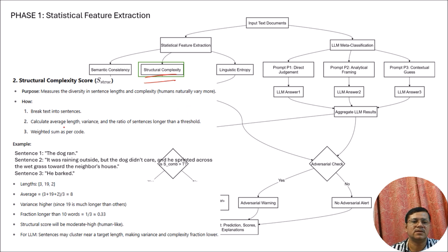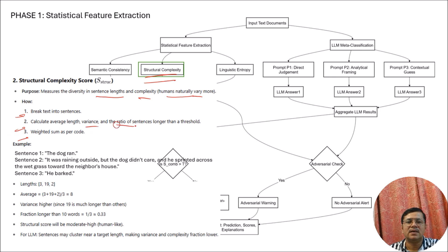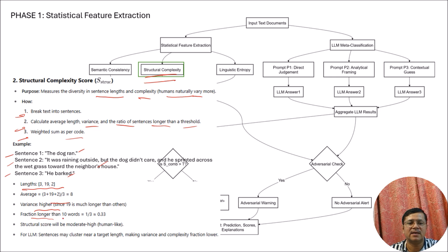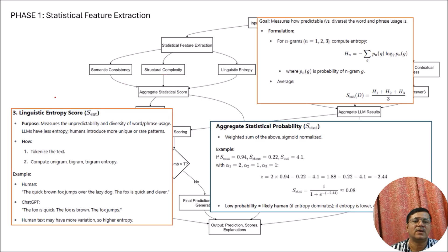Structural complexity measures the diversity in sentence length. Human writing generally shows a lot of diversity in sentence length. To identify this, we break the text into sentences, calculate the average length, variance, and the ratio of sentences longer than a threshold, and compute a weighted sum. Human-like text tends to get a higher structural score because of more variation.